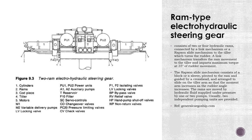The first type is the ram type electro-hydraulic steering gear, which basically consists of either two or four hydraulic rams connected by a link mechanism — or what we call a Rapson slide mechanism — to the tiller, which turns the rudder. What you see on screen is a two-ram electro-hydraulic steering gear; a four-ram version also exists. A link mechanism transfers the ram movement to the tiller.